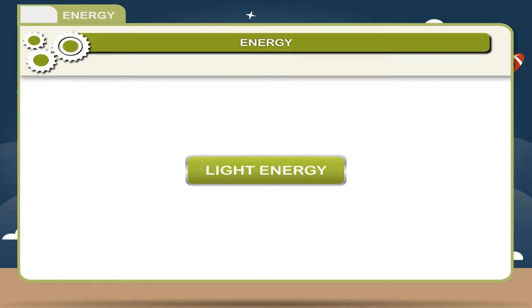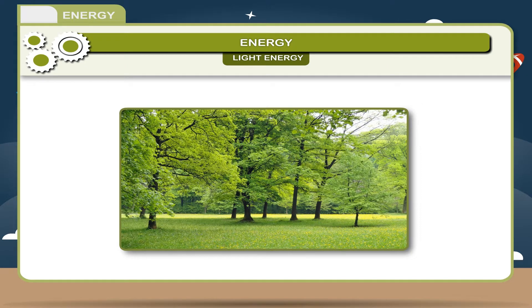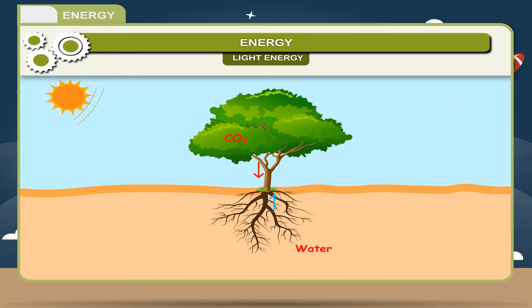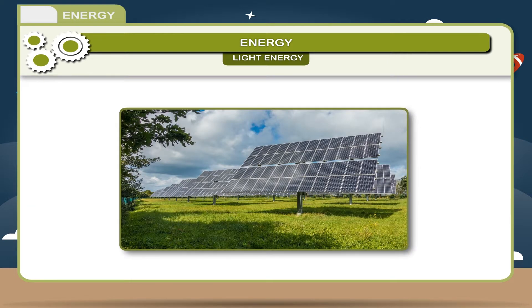Light energy. Light is a form of energy which produces the sensation of vision. It enables us to see objects around us. Light energy from the sun is an important source to sustain life on the earth because plants prepare their food in the presence of sunlight during the process of photosynthesis. Solar cells can convert the light energy from the sun into electrical energy.